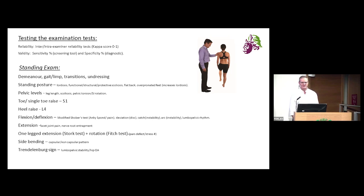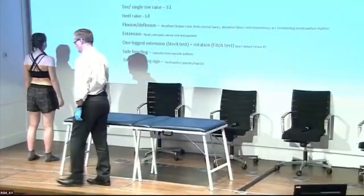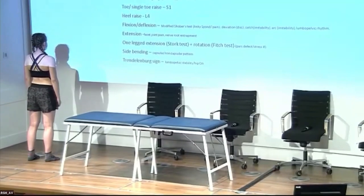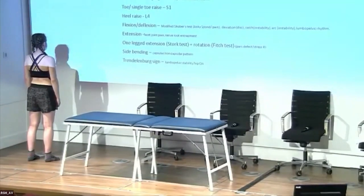I'll ask Natasha to come up as my patient to demonstrate the standing exam. Although I'll talk about it for a while, Natasha has already walked onto the stage — I watched her demeanor, saw whether she was in pain or perhaps depressed with a flat affect. Was she walking with a Trendelenburg gait, an antalgic gait, or shifted over with a protective scoliosis?